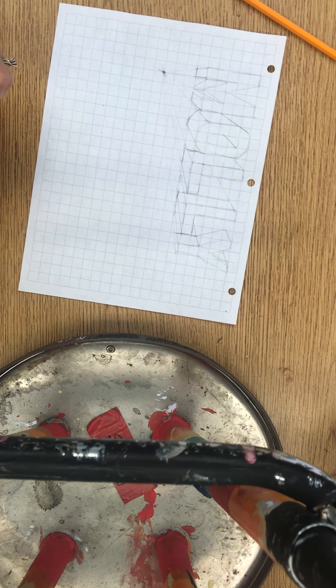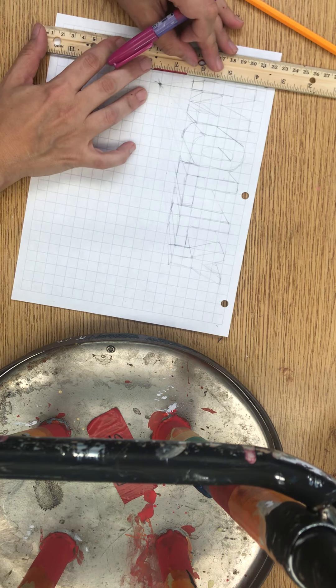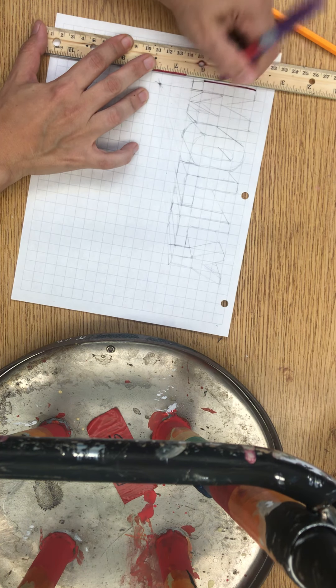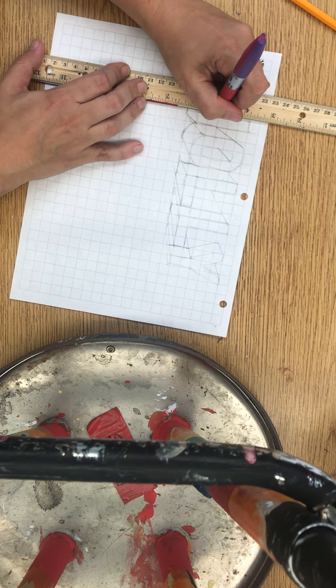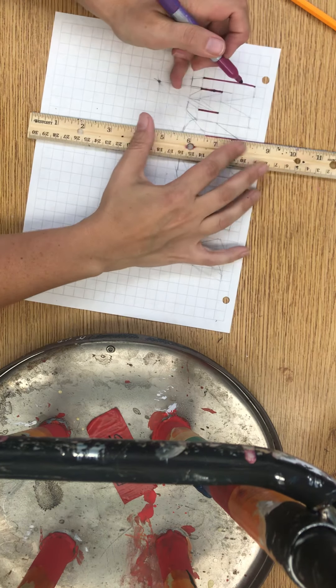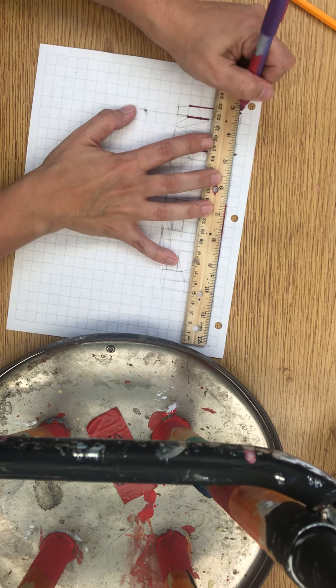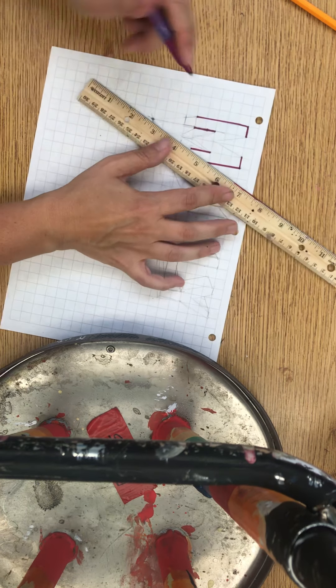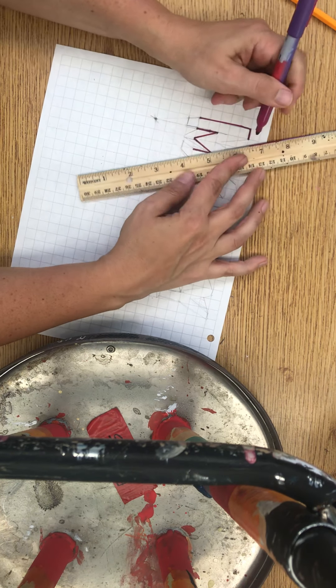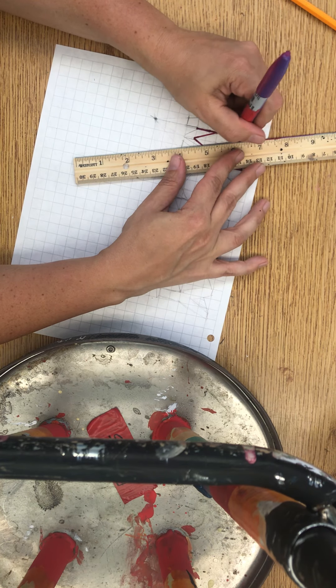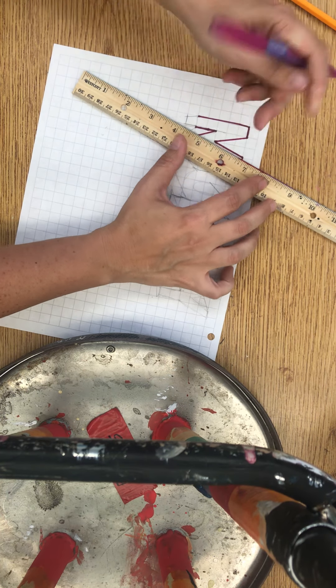You're going to pick out some Sharpies. Use that ruler. Go ahead and I'm just going to do the M for you. Remember, my M is wider than the rest of the letters, except for W.